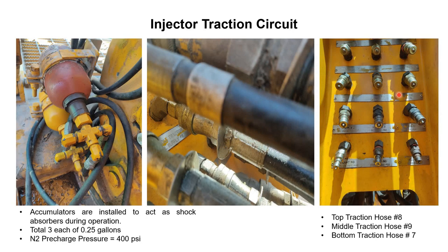Before going ahead, we will see the function of the accumulator in this particular circuit. Accumulators are installed to act as shock absorbers during operation. When we are running in hole or pulling out of hole, there are vibrations in the chains. If these accumulators are not installed, there will be pulsations on the cylinders. To avoid the pulsations, these accumulators are installed. They have pre-charged nitrogen in them and act as shock absorbers.